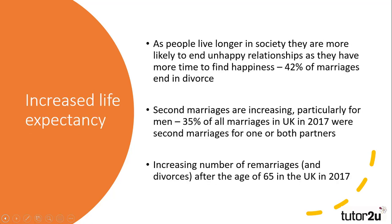Increased life expectancy has also impacted on the growth of reconstituted families. With general knowledge of health and nutrition and medical advances, people are living longer, delaying marriage and childbearing, and are more likely to leave a partner they are unhappy with. With 42% of marriages ending in divorce and the average age of divorce being in the mid-40s, people are looking to end relationships they are unhappy in at a time when they can find another partner to fulfil their needs. Second marriages in the UK are increasingly popular, with 35% of marriages in 2017 being a second marriage for at least one partner. This is reinforced by the growth of marriage and divorce for over 65s in the UK, with rises for both in 2017 against a national trend of decline.